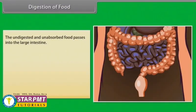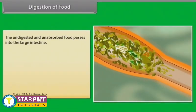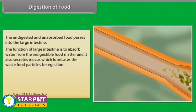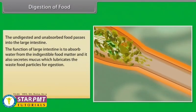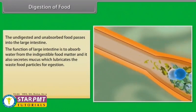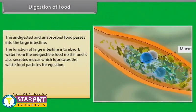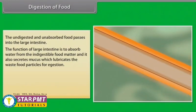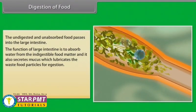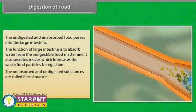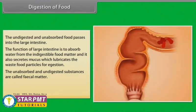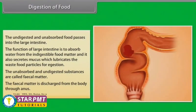The undigested and unabsorbed food passes into the large intestine. The function of the large intestine is to absorb water from indigestible food matter; it also secretes mucus to lubricate waste food particles for ejection. The unabsorbed and undigested substances are called faecal matter, which is discharged from the body through the anus.